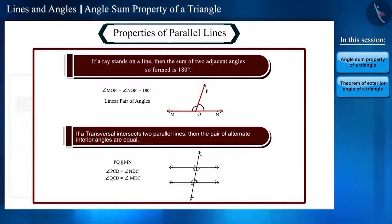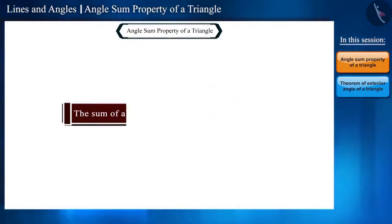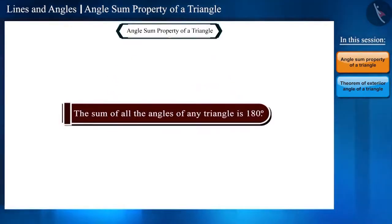So, let's start with the first theorem. The sum of all the angles of any triangle is 180 degrees.